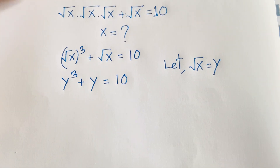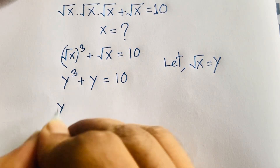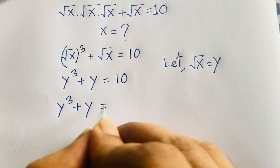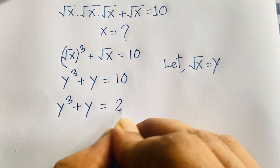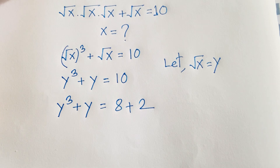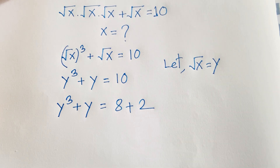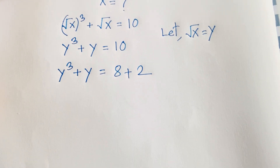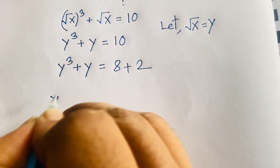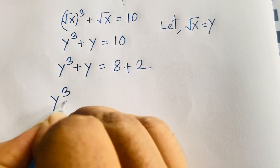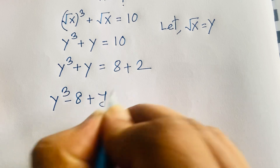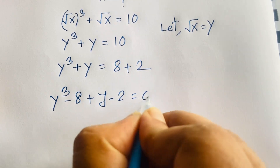We can rewrite the right-hand side as 8 plus 2, so y³ plus y equals 8 plus 2 equals 10. Moving everything to one side gives us y³ minus 8 plus y minus 2 equals 0.